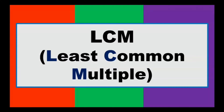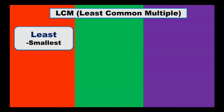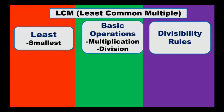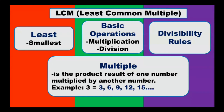Our topic is all about LCM — Least Common Multiple. Just like what we did for GCF, let's review some key points to be used in this topic. First, synonyms of 'least' include 'smallest,' which is most commonly used. Next, you should have already mastered the four basic operations, especially multiplication and division. Then, don't forget about divisibility rules so that it is easy to find numbers divisible by any given number. Lastly, let's go back to the meaning of 'multiple': a multiple is the product or result of one number multiplied by another number.